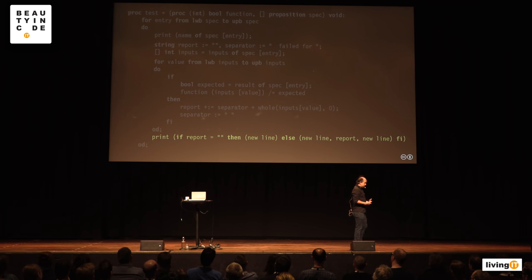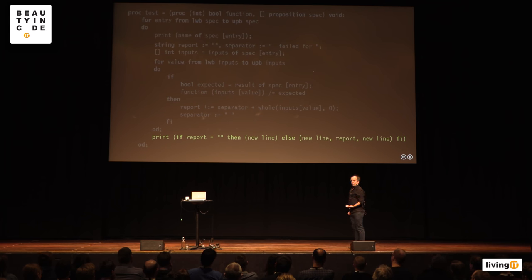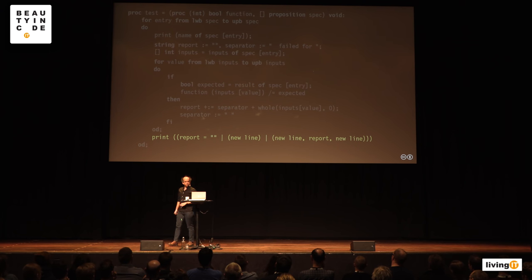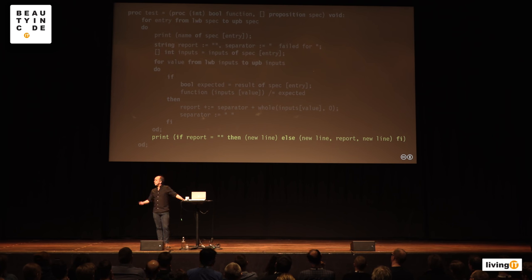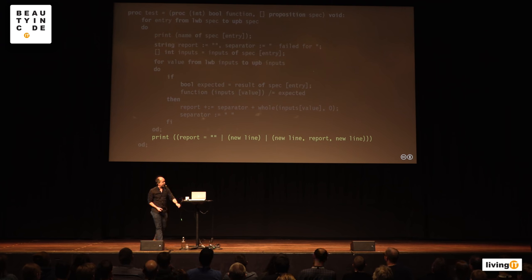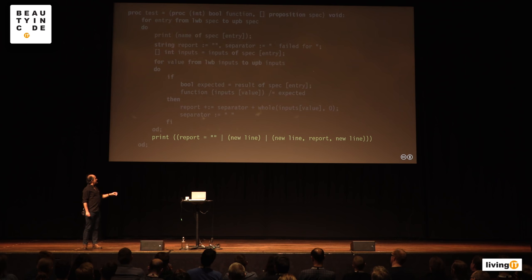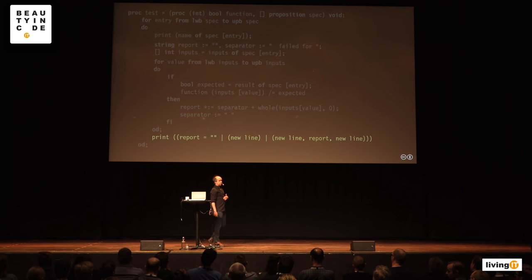There's even a shorthand form — a ternary operator — for those who want to hide their intent from their colleagues. Algol 68 offers that one as well. What I've been demonstrating isn't necessarily how people tested in 1968 — the Algol report came out and was revised over the next few years. If you want examples of the test-first approach you had to wait until the 1970s.